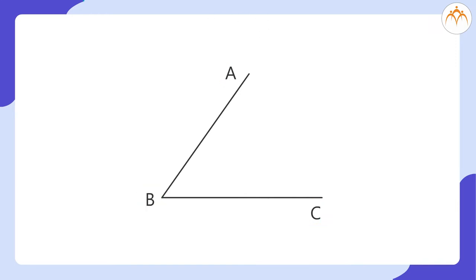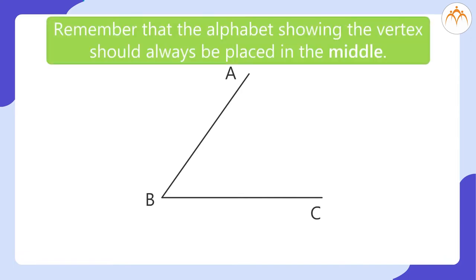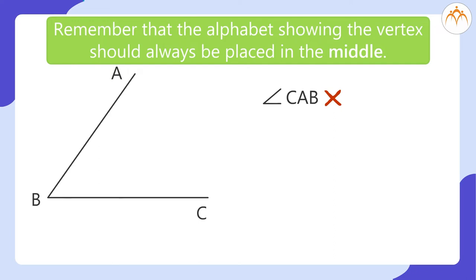Children, can we say that the above figure has angle CBA? Yes, we can read the angle like that as well. Remember that the alphabet showing the vertex should always be placed in the middle. We cannot read it as angle C, A, B.